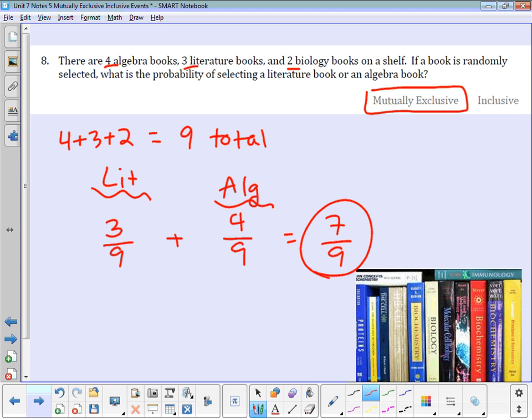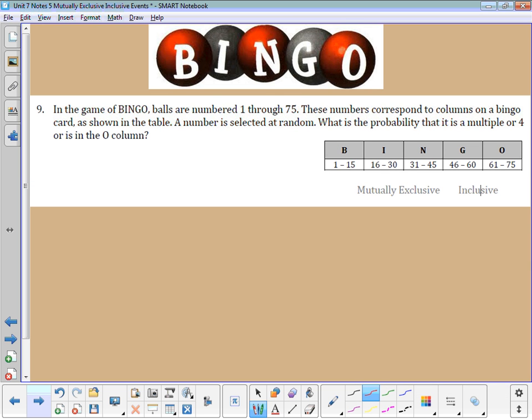Number 9, this is a fun one. Now we're looking at a bingo card. In the game of BINGO, you've got five columns labeled with B, I, N, G, and O. Inside each of those columns there's a group of numbers. B has 1 through 15, I has 16 through 30, N has 31 through 45, G is 46 through 60, O is 61 through 75. We are looking for the probability that a number is a multiple of 4 or is in the O column. First of all, we know there's 75 total numbers.